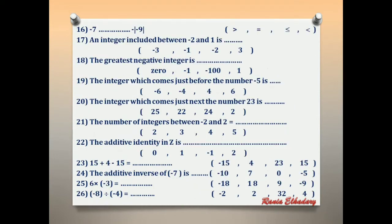Number 16: compare negative 7 and negative (absolute of negative 9). Absolute of negative 9 is 9, and with the negative outside, the answer is negative 9. Negative 7 is closer to 0, so negative 7 is greater than negative 9.